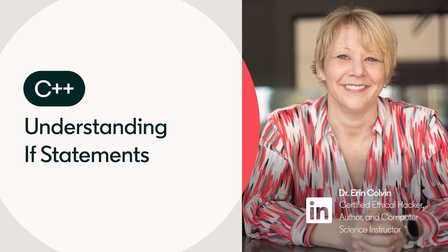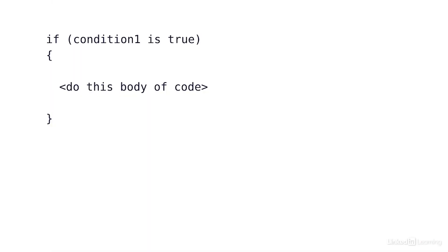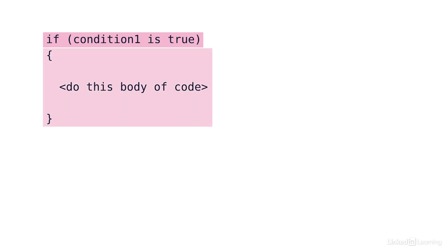Inputting and outputting is great, but what if we wanted to make a decision based on the input that a user gives? There are two decision structures that we will go over. The first is the if-then. The structure of the if is such that if this condition is true, it will do the body of code.